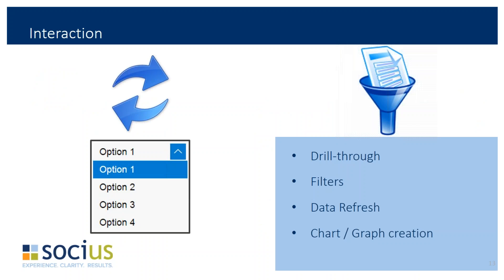Next is interaction. Do I need the user to be able to interact with the report? That might include a dropdown to filter the data — a parameter-type report — drill-throughs, the ability to trigger a data refresh while the report is open, and chart and graph creation. Those are all interaction-type things to think about.